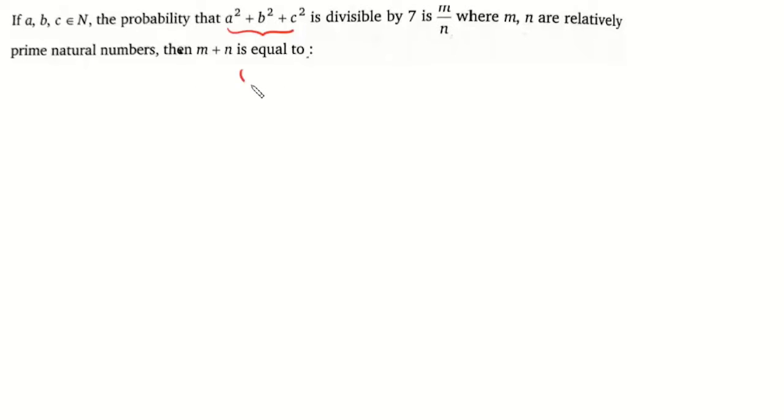Now we know that we can write any number as 7m plus r whole square, and (7m + r)² ≡ r² (mod 7).